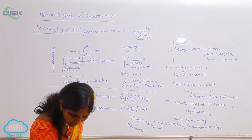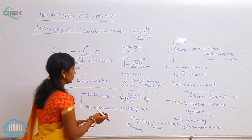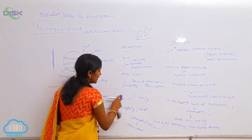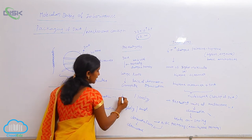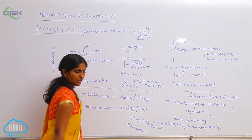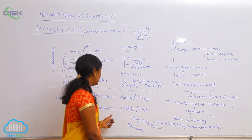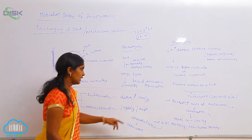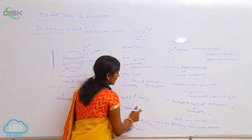One is euchromatin and another is heterochromatin. Euchromatin is shown as dark color while staining with loosely packing, and heterochromatin is tightly packed and shows light coloration.